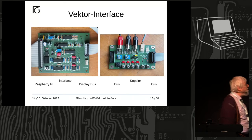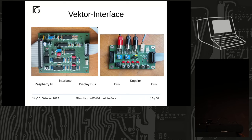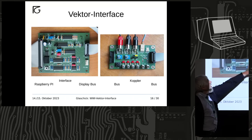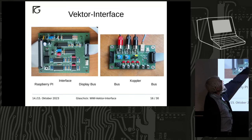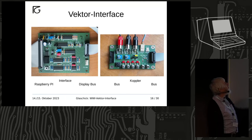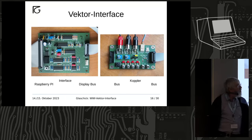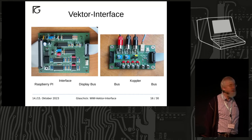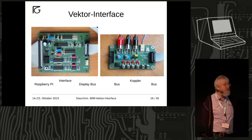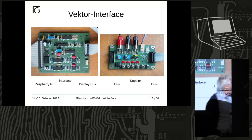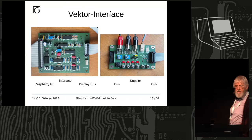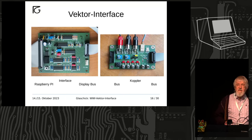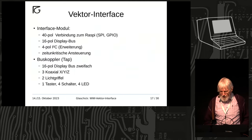Was ich jetzt gebaut habe: ein Interface mit einem Arduino zum Testen und einem Raspberry Pi, auf dem der Simulator läuft. Es gibt Hardware für XY, Hardware für den Helltastimpuls, und dann geht es auf den Display-Bus. Für jedes Sichtgerät können wir eine ganze Menge anschließen — wir haben zum Vorführen zwei Installationen, eine mit drei und eine mit zwei Sichtgeräten. Mit Schaltern kann man anwählen, welches Sichtgerät das Signal haben will.